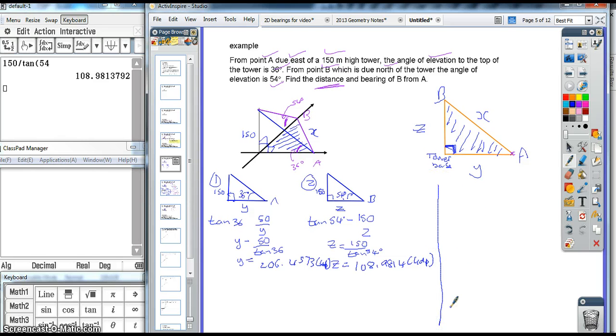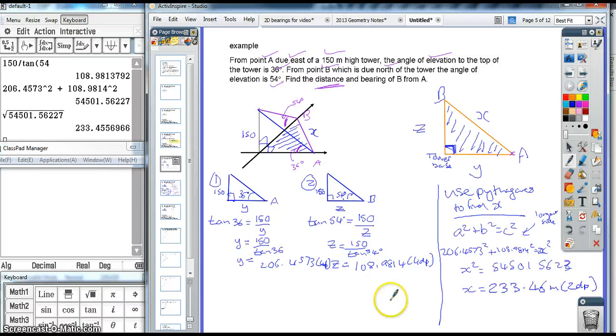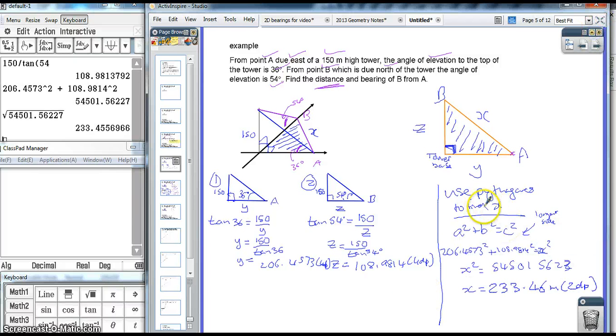Okay, so, having worked that out, now, use Pythagoras to find X. Pause the video, please, try and work it out, and then see if we agree in a minute. Okay, so, I've used Pythagoras to find X. A squared plus B squared equals C squared, where C is the longest side. So, 206 squared plus 108 squared equals X squared. Gives me 54,501.5623. Square root both sides to get X, and that gives me 233.46 meters to two decimal places.